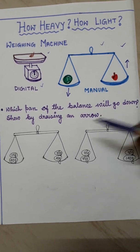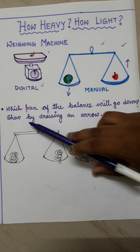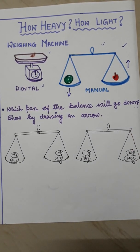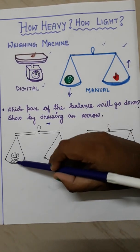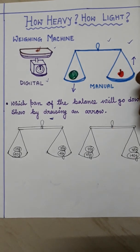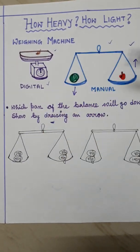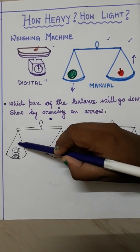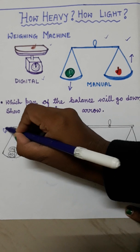Here you can see which pan of the balance will go down, shown by drawing an arrow. I have drawn a weighing balance with some weights on each side. At first we have to find out the total weight of this portion. Here 40 grams and 25 grams. What will be the total weight? 65 grams.